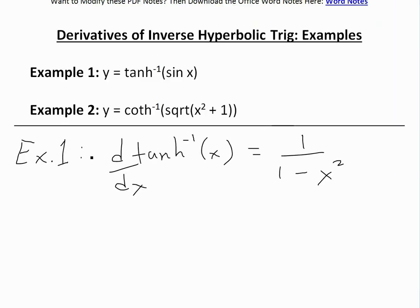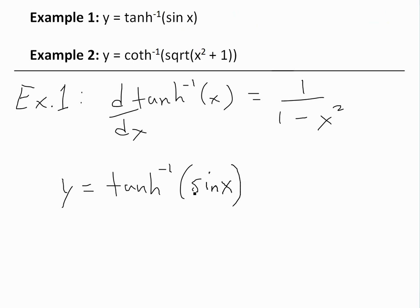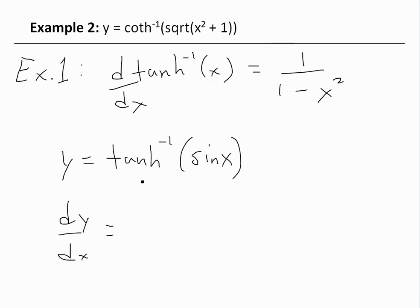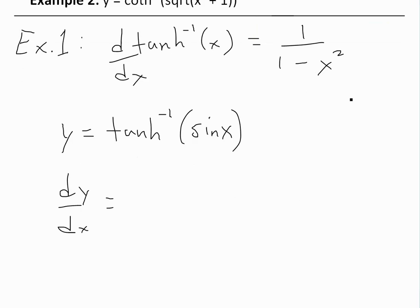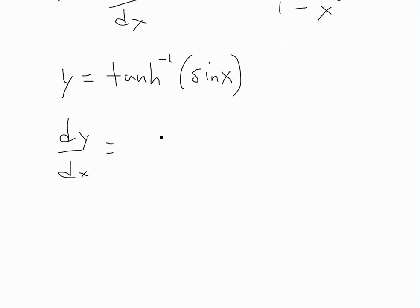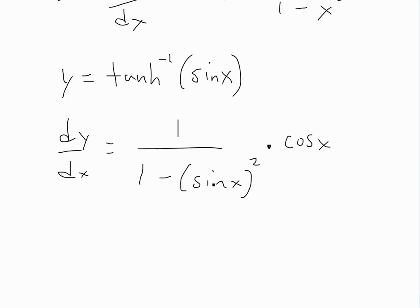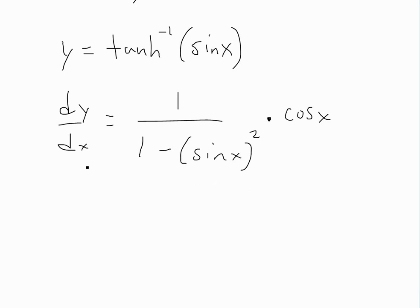So now we can use this. If we have y equal to inverse hyperbolic tan of sine of x, we take the outer derivative first. So dy/dx is going to equal 1 over 1 minus x squared, but now x squared is replaced with sine of x. So we'll have 1 over 1 minus sine of x, squared. Now using the chain rule, we have to find the derivative of sine of x, which is just cosine of x. We can stick with this answer for an exam unless they ask to simplify.